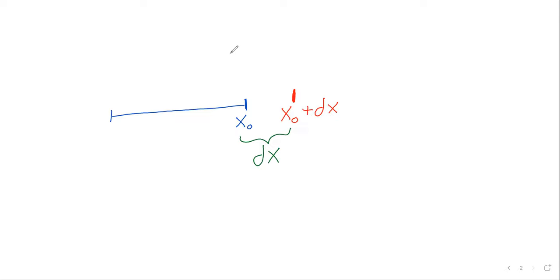And we know what the function is doing on the interval. So we know the x value, x sub 0. And we know the y value, y sub 0.